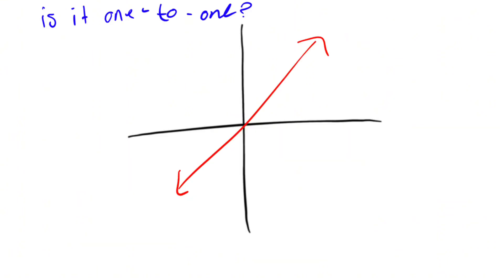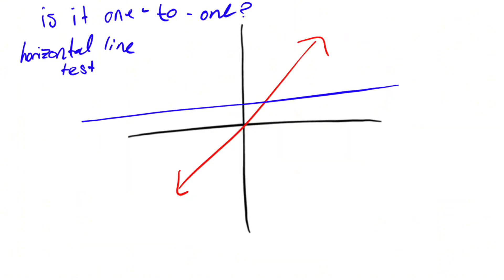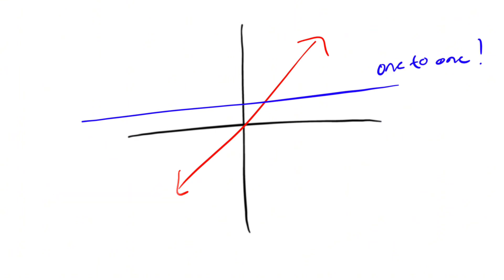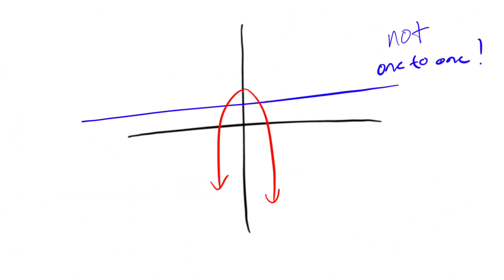Is it one-to-one? Let's find out using the horizontal line test. If it only crosses once, it is one-to-one. If it crosses multiple times, it is not one-to-one.